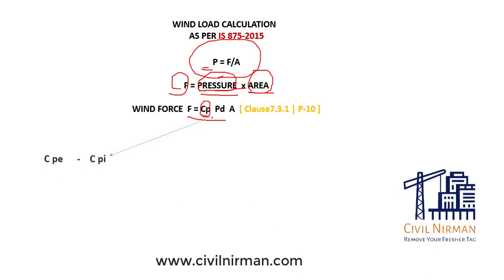The wind coefficient CP is distinguished into two categories: the external pressure coefficient and the internal pressure coefficient. We will look at each of these in detail from the code.